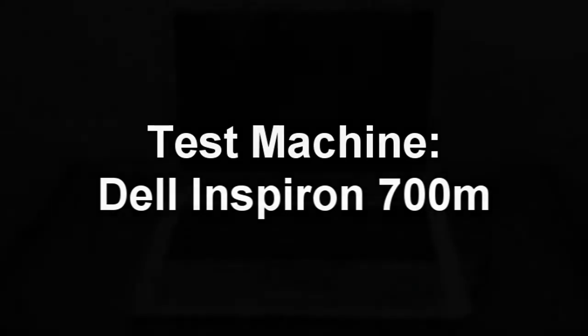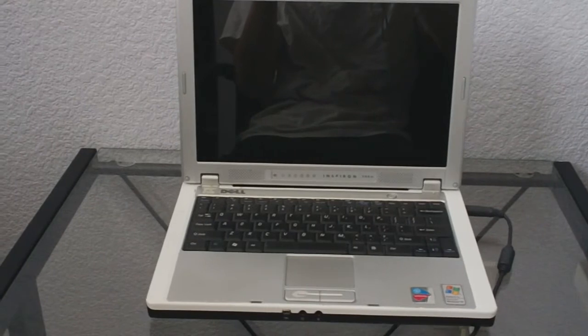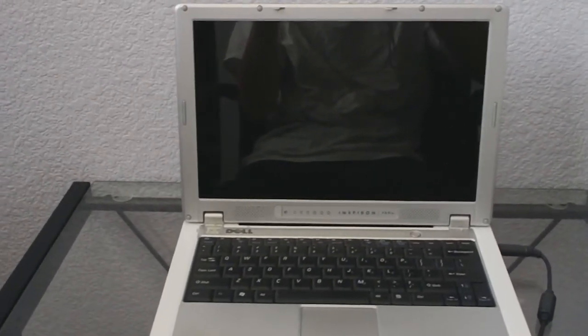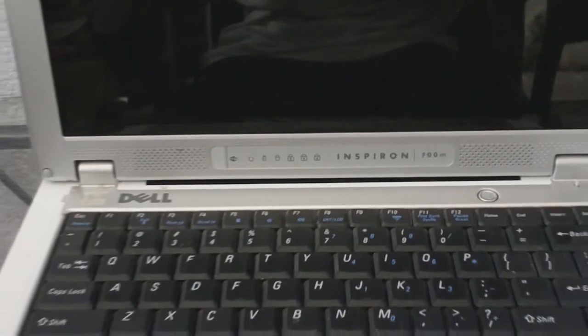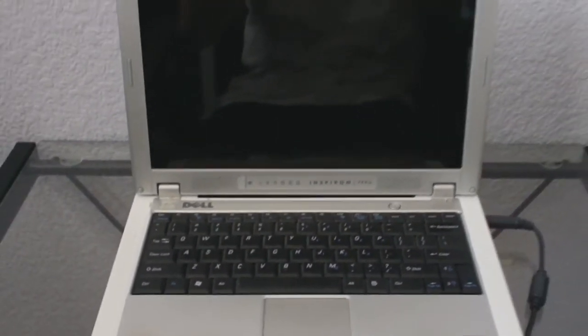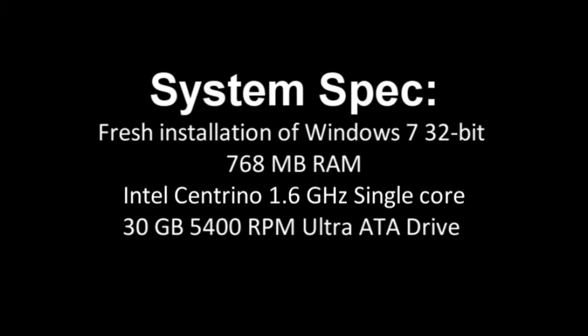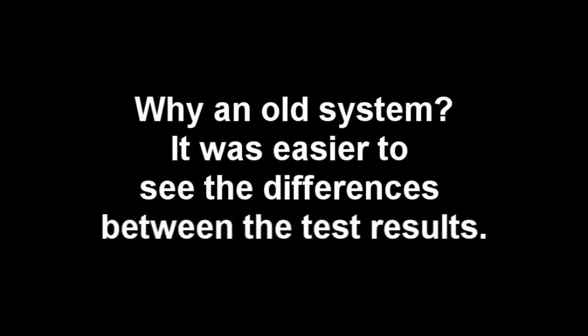For the test I used my old Dell Inspiron 700M, which I got about 6 years ago for college. The laptop is pretty old and has a single core 1.6 gigahertz processor, 768 megabytes of RAM, and a 30 gigabyte hard drive that runs at 5400 RPM. I also installed a fresh copy of Windows 7 32-bit onto it. I decided on using such an outdated machine because I wanted to see how each software performed on an old system.